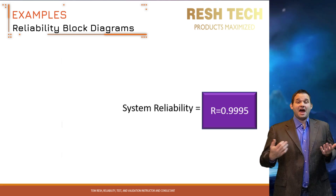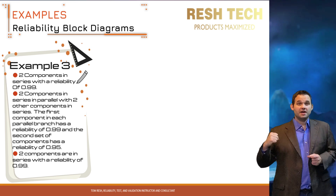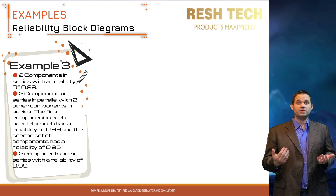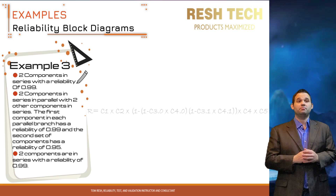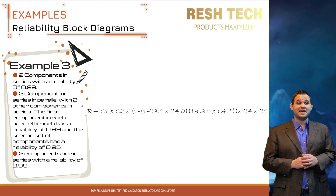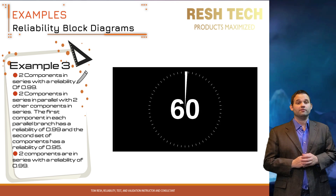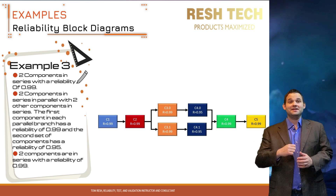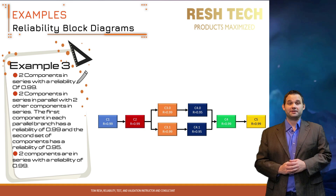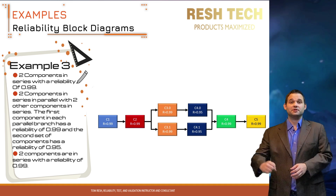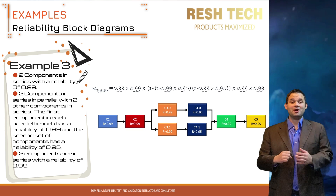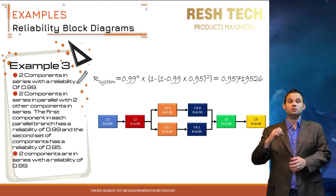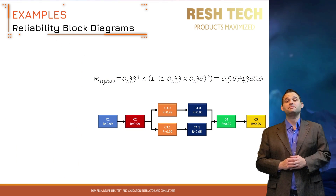Here's an interesting example. We have two series components, then two parallel branches with two components in series in each parallel branch, followed by two more components in series. Pause the video and solve. We end up with a reliability of 0.957. In the real world you will want to see if there's any room to improve the system's reliability even further.